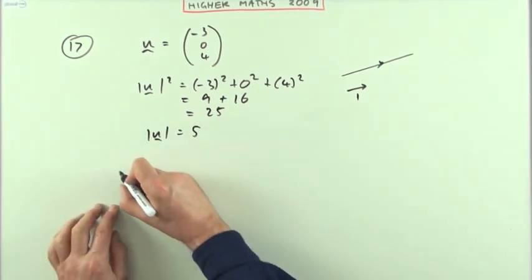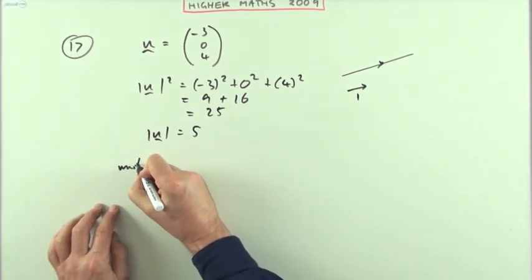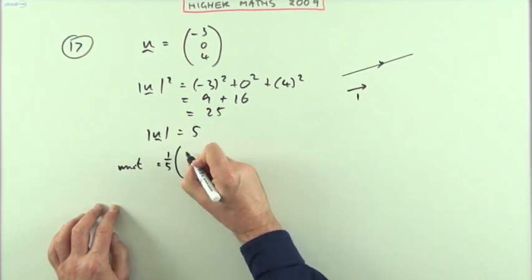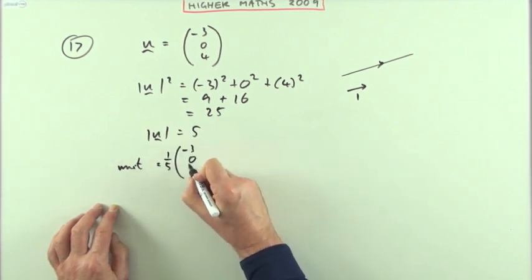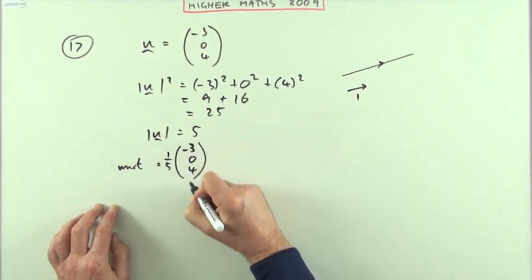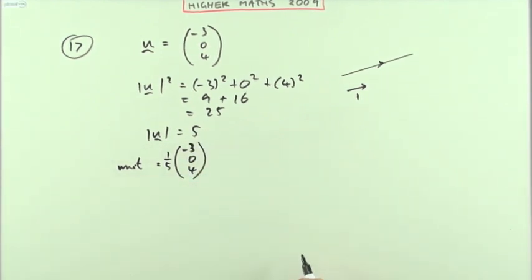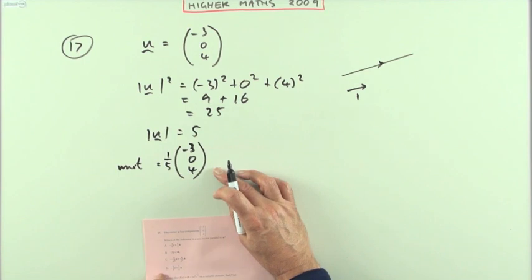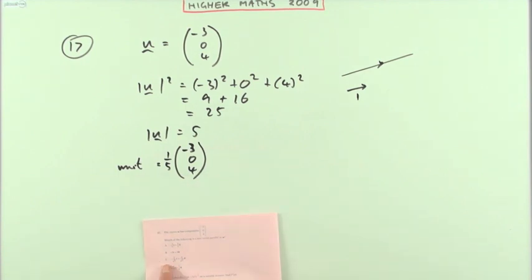So if I want a unit vector it will be one-fifth of that, one-fifth of negative three, oh four. Now which formula I write that in, it doesn't actually want it expressed in component form, it wants it as a combination of the unit basis vectors i, j and k.